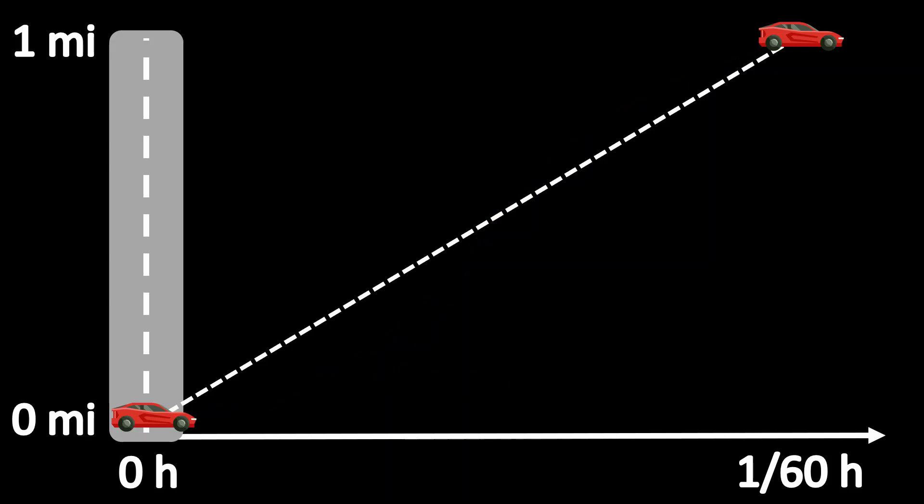But maybe we just picked a bad path. Here's a crazier one. But again, we see that there's at least one point where your speed was exactly 60 miles per hour, above the speed limit.